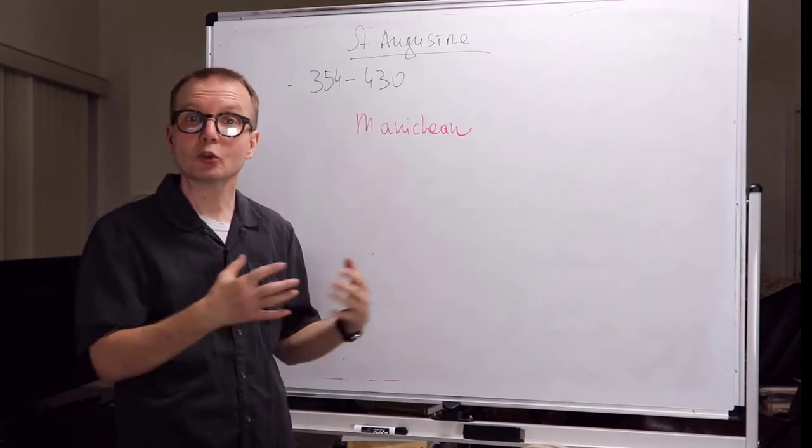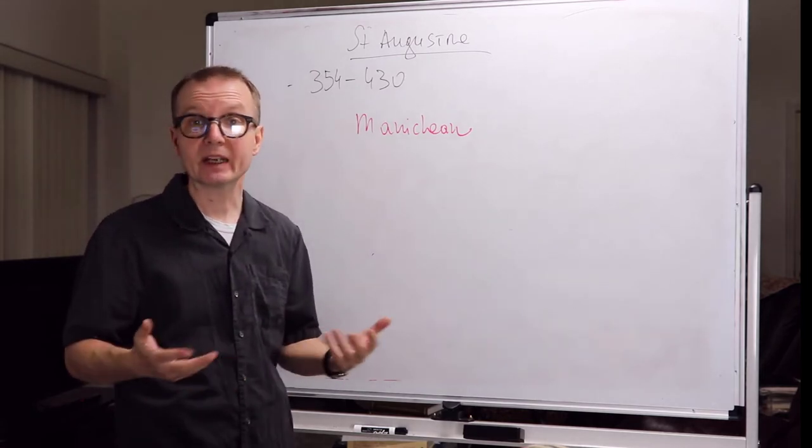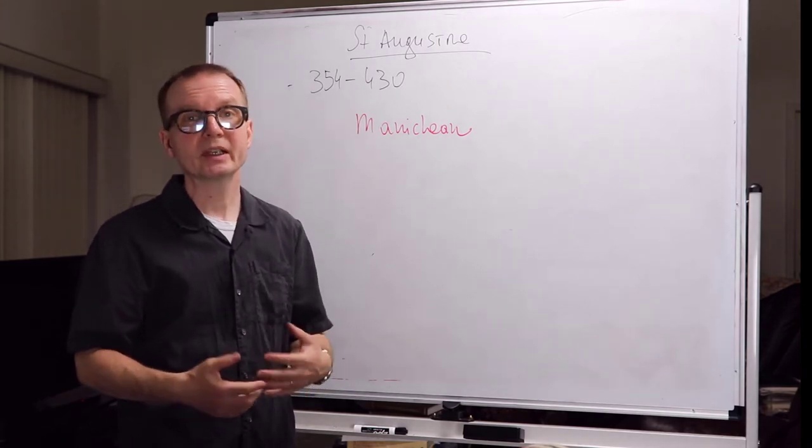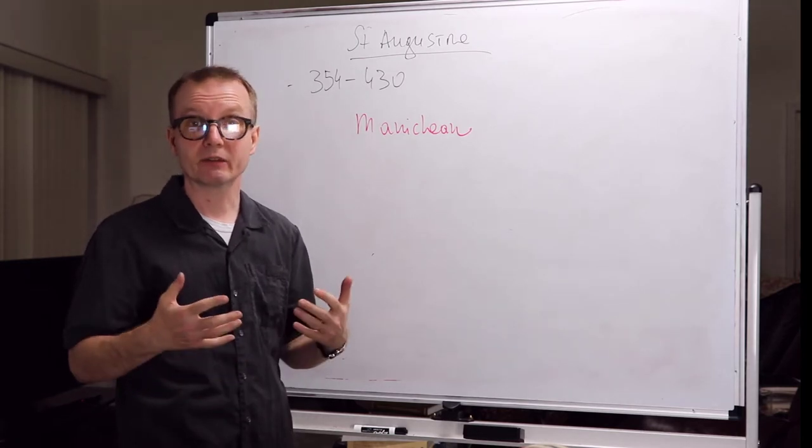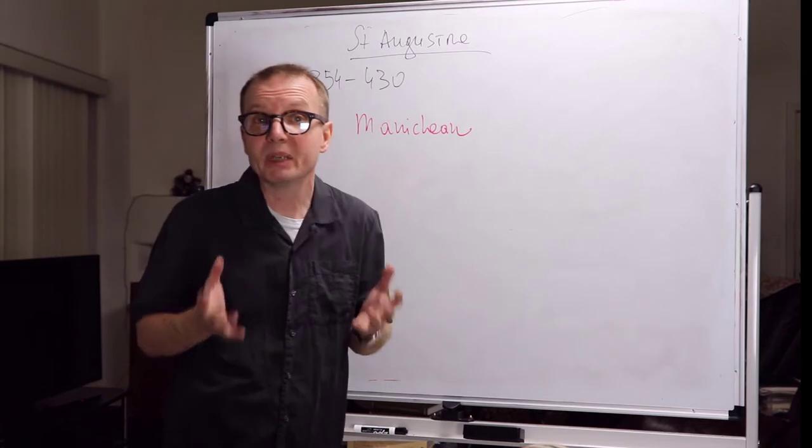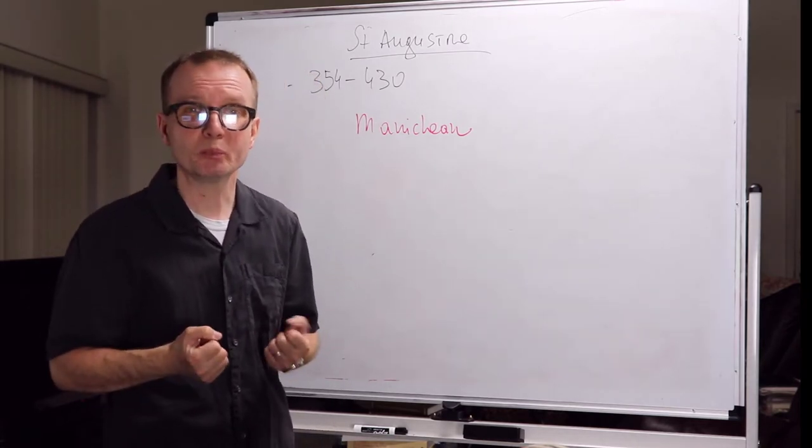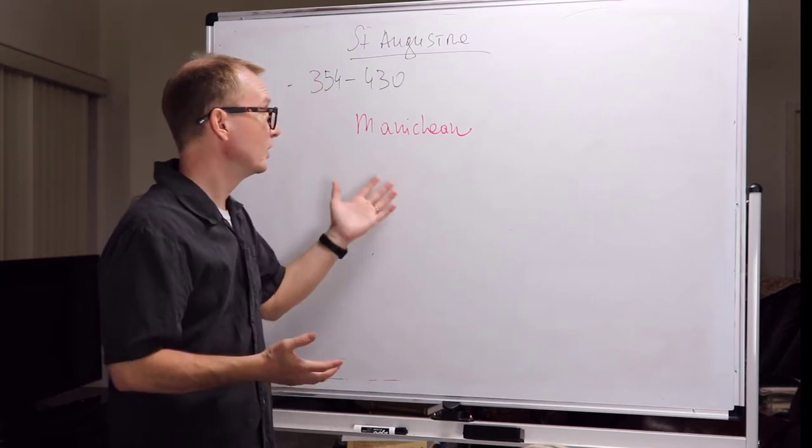They believed that evil was the creation of this God of darkness. Note that it's related to Christianity, however it's considered one of the heresies. In fact, heresy in classical Greek just means choice. People had different choices what to believe at the time, and there were a variety of different beliefs. People were sometimes confused which one to pick. And again, Saint Augustine at first actually joined Manicheans.